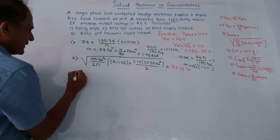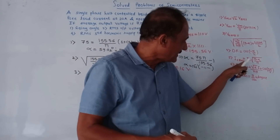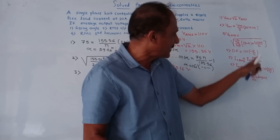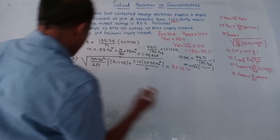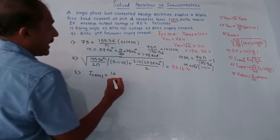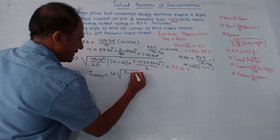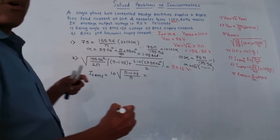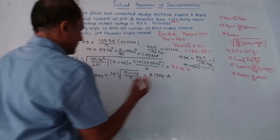Third part: RMS supply current. The formula is I_S_RMS = I0 × √((π − α) / π). Again, for the (π − α) term, alpha must be in radians. So I_S_RMS = 10 × √((π − 1.03) / π) = 8.1984 amperes.